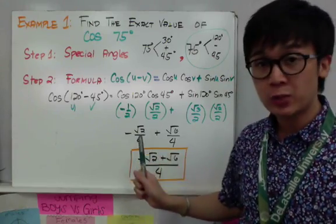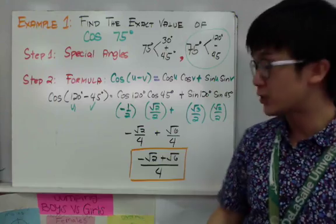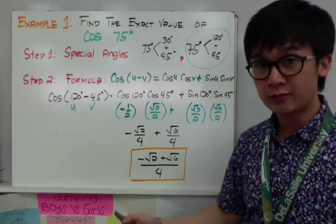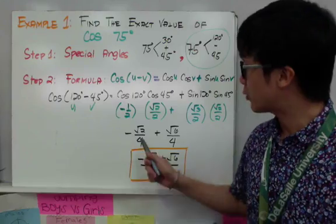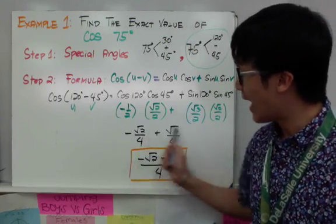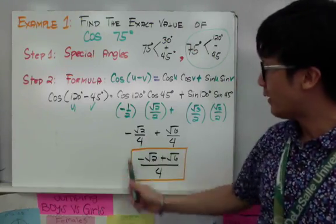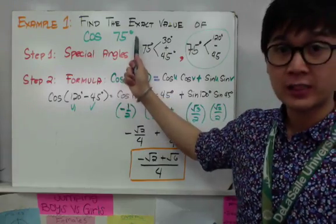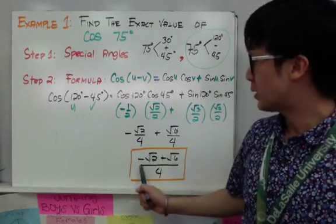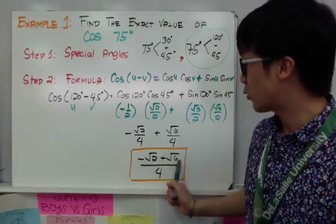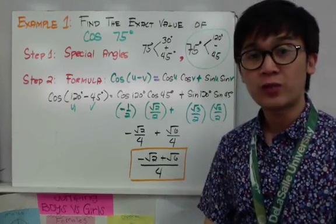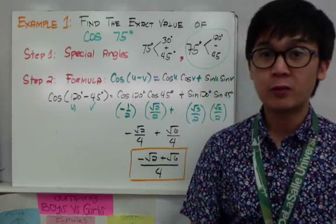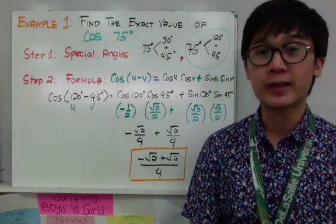Adding fractions is straightforward here because both fractions have the same denominator. Simply copy the denominator and add the numerators. Our final answer for the exact value of cosine 75 degrees is negative square root of 2 plus square root of 6, all over 4. We've found the exact value of cosine 75 degrees without using a calculator.